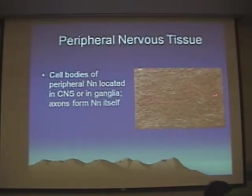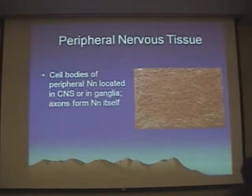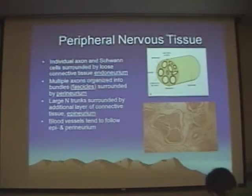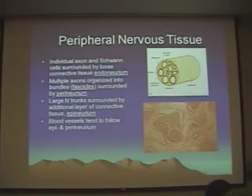Peripheral nerves can be kind of challenging to identify. The nuclei that you see within peripheral nerves do not represent neuron nuclei — they represent the nuclei of Schwann cells, which provide myelination to those peripheral nerves. Peripheral nerves also have various connective tissue layers surrounding them, just like muscles: endoneurium, perineurium, and epineurium.